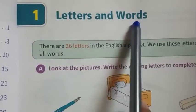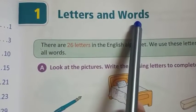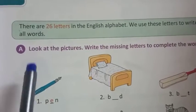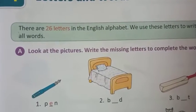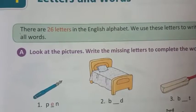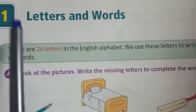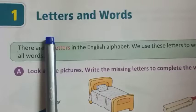First we understand letters, and then we understand words. What are letters? A, B, C, D, E, F, G, H, I, J, K, L, M, N, O, P, Q, R, S, T, U, V, W, X, Y, Z. These are letters.